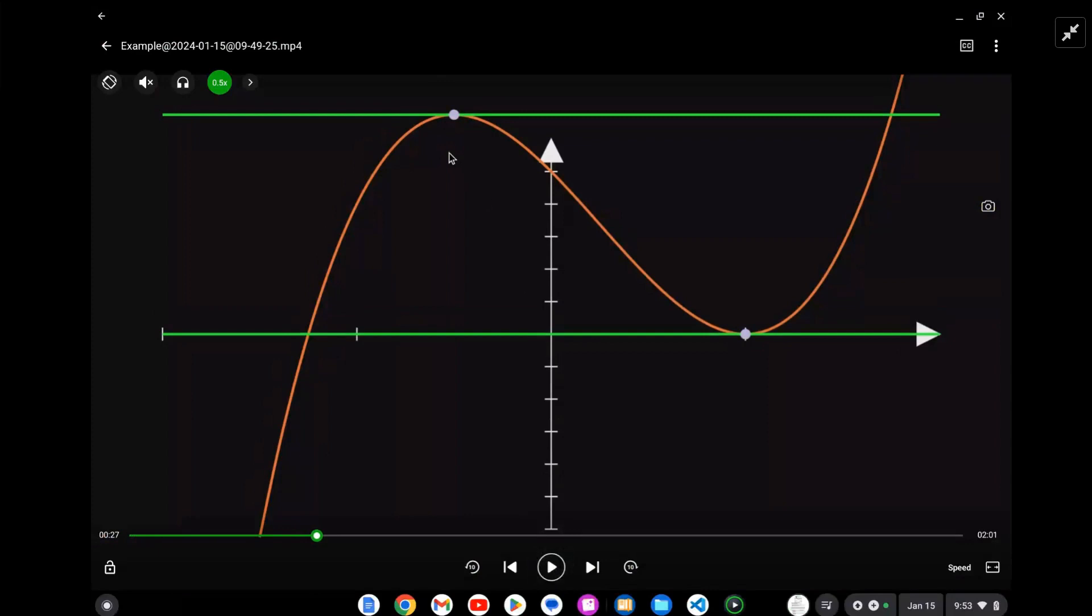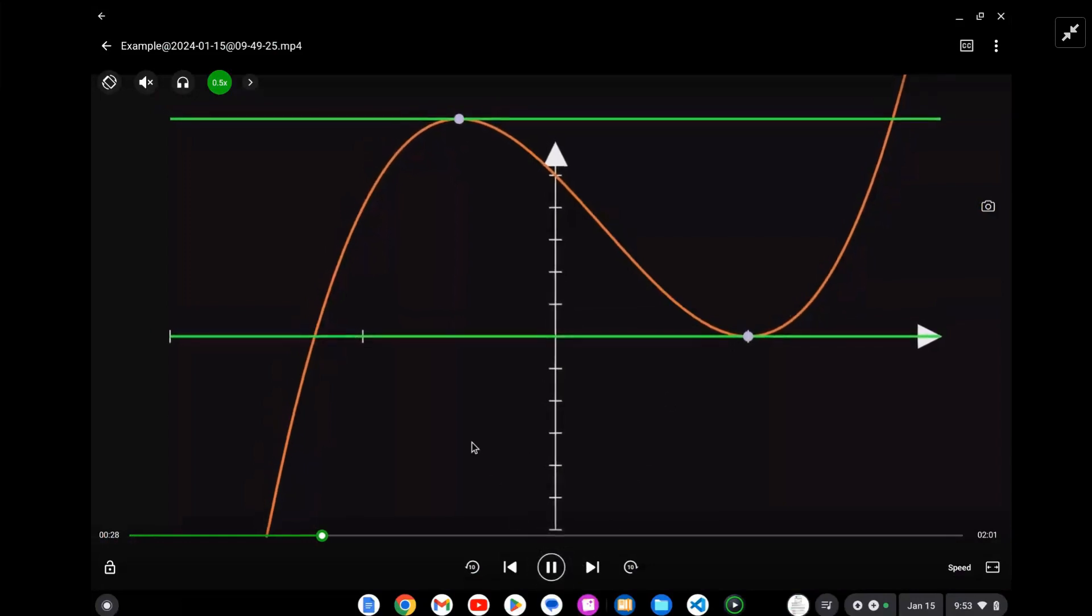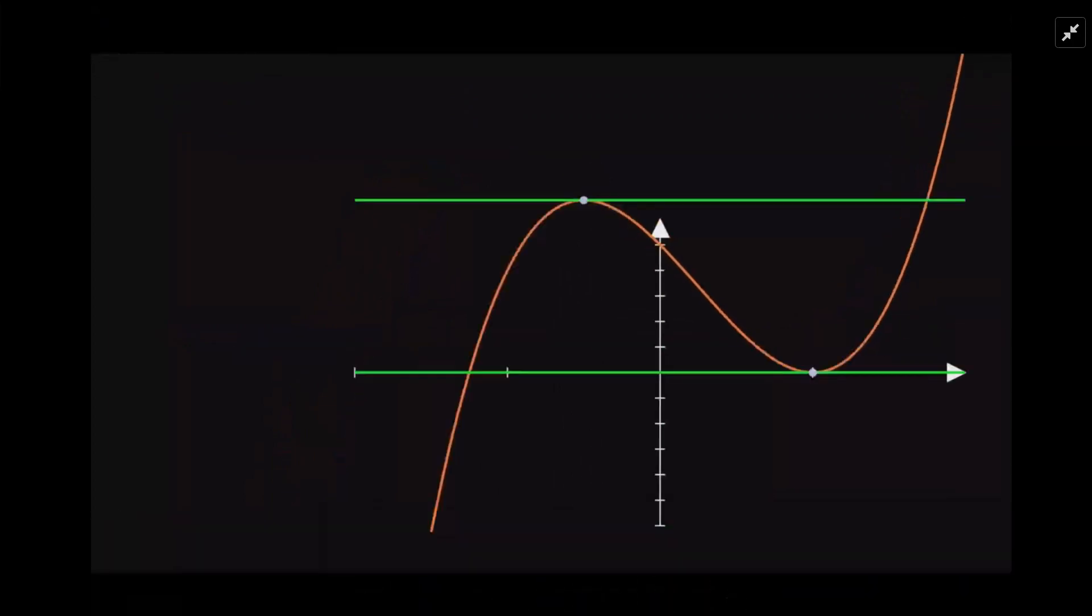When we say the derivative is equal to zero, it's the same as saying the tangent is horizontal or has a gradient or slope of zero. So that's the fact that we're going to use here.